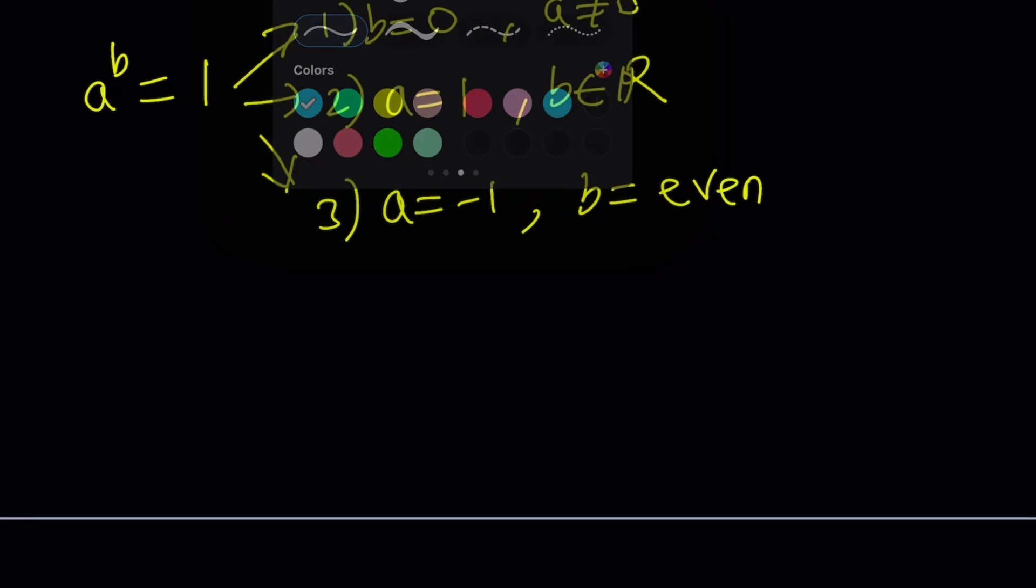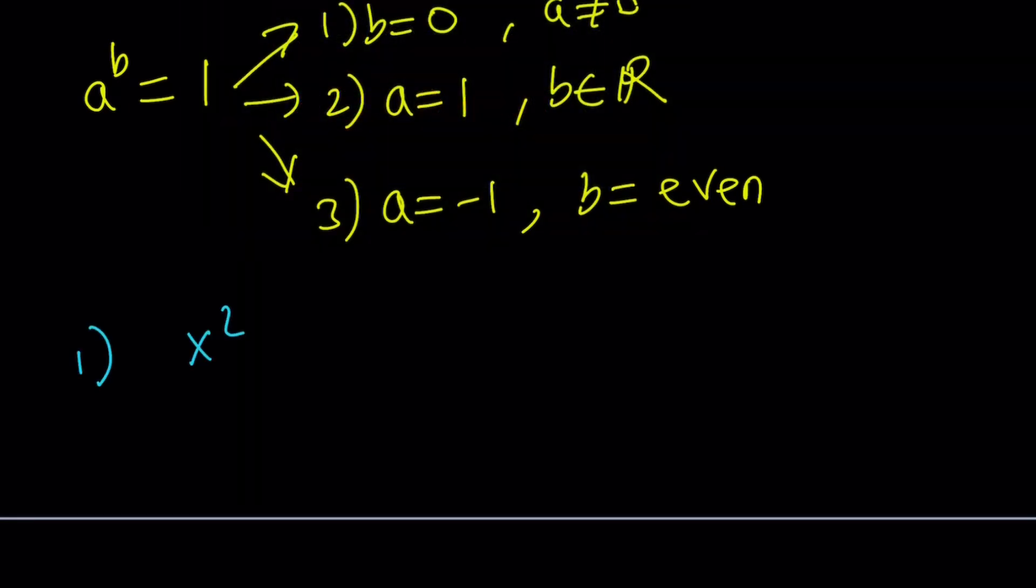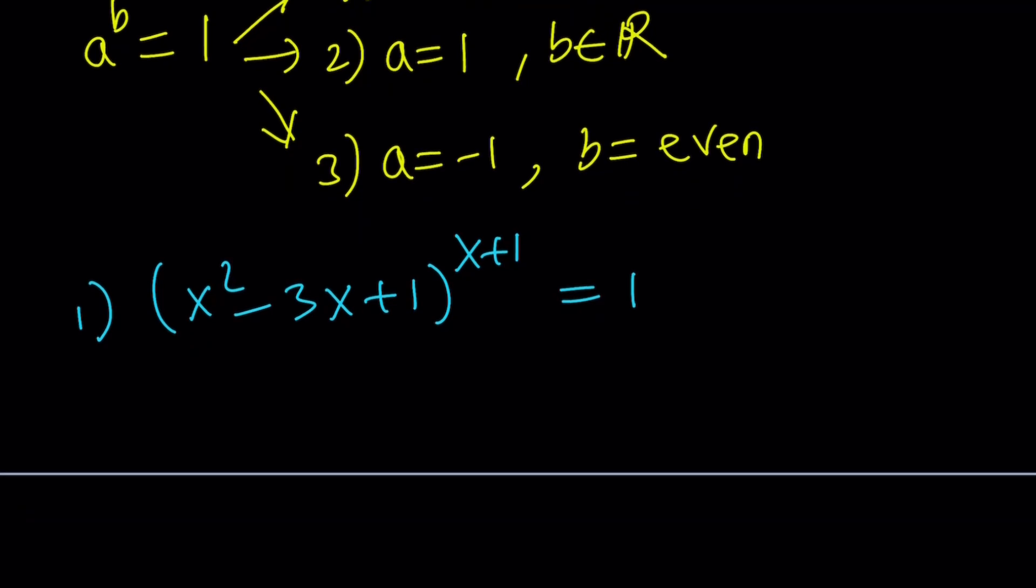Let's start looking at each case. The first case, again, our expression was the following equals 1. a is the base, b is the exponent. So we want b to be 0 and a to be non-zero.